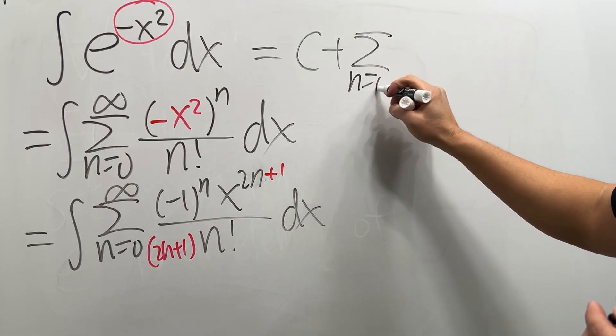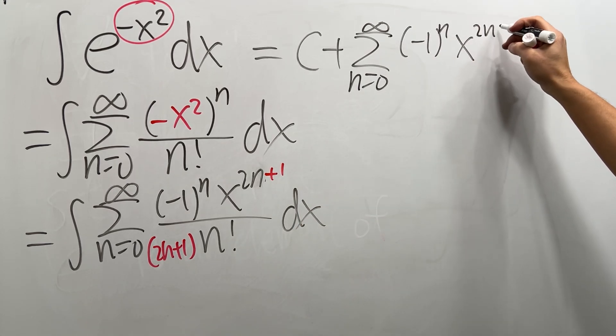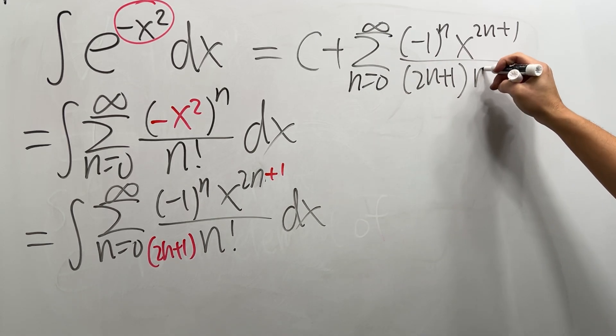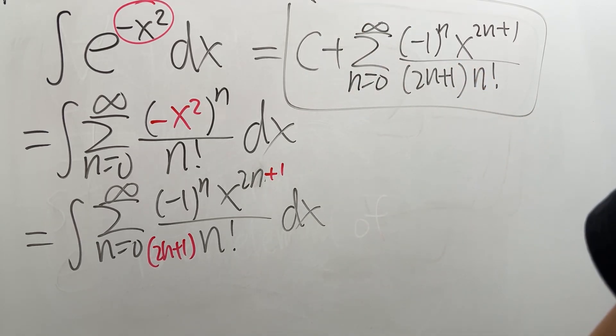So that's the constant, and then we have the sum as n goes from zero to infinity, and then the rest of the stuff: negative 1 to the n, x to the 2n plus 1, over 2n plus 1 times n factorial. And that is a beautiful answer.